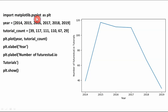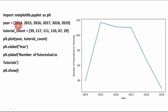We import only pyplot, not all the interfaces, and we use plt as the alias name for matplotlib.pyplot. In all data visualization programs we have to import this interface. Here the x-axis contains the values 2014, 2015, 2016, 2017, 2018, 2019, which you can see on the x-axis of the graph.